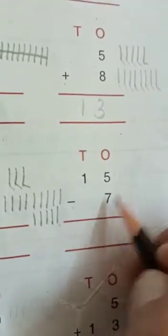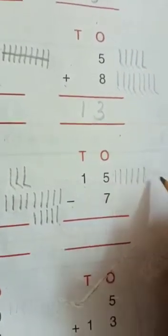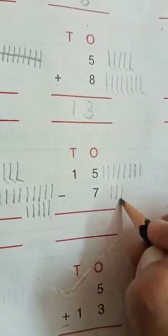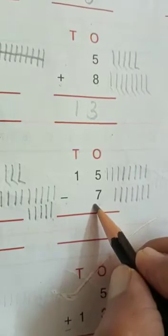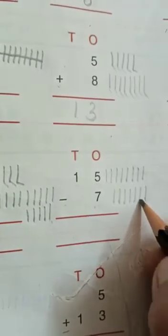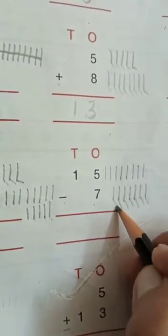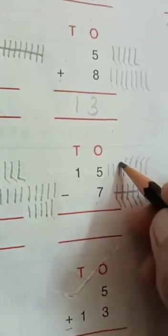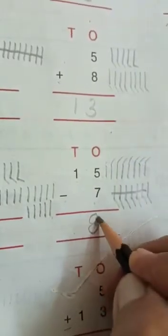Now next: 15 minus 7. For this we will draw 15 lines and cut 7. Lines: 1, 2, 3, 4, 5, 6, 7, 8, 9, 10, 11, 12, 13, 14, 15. And we cut 7 lines: 1, 2, 3, 4, 5, 6, 7. How many lines are left? Count with me: 1, 2, 3, 4, 5, 6, 7, 8. Answer is 8.